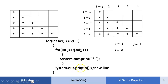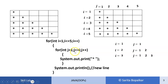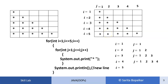System.out.println takes the cursor to the new line. Then i increments. For i equals 2, j varies from 1 to 2. Now i increments to 3, and j varies from 1, 2, 3 because j is less than or equal to i, which is 3 — so 3 stars are printed. Similarly for i equals 4, j varies from 1, 2, 3, 4 — giving 4 stars in the fourth row. For i equals 5, j varies from 1, 2, 3, 4, 5 — so we get 5 stars. This is how we print the pattern.